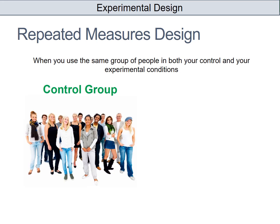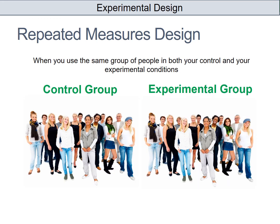So your control group would be one group of people — you'd get them to do a particular task, and then once they've done that task, you might give them a short break and then ask them to do a different task. That would be a repeated measures design.